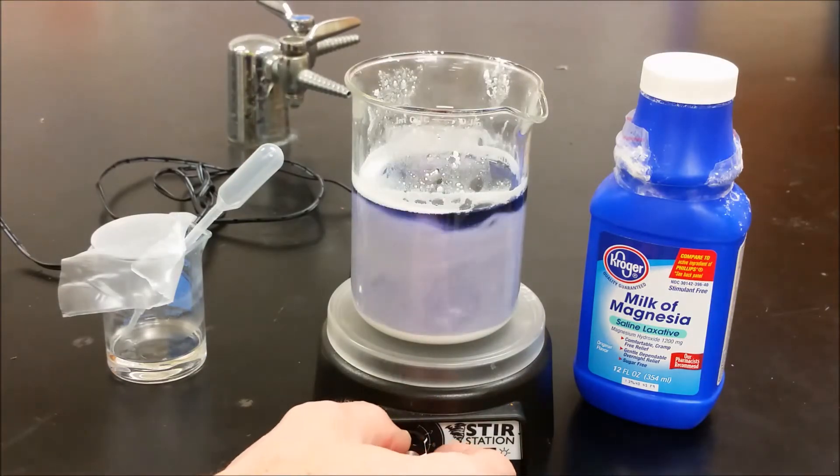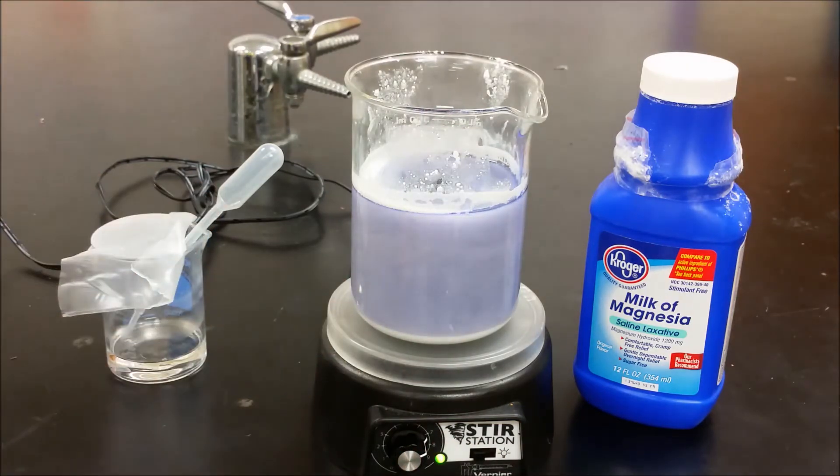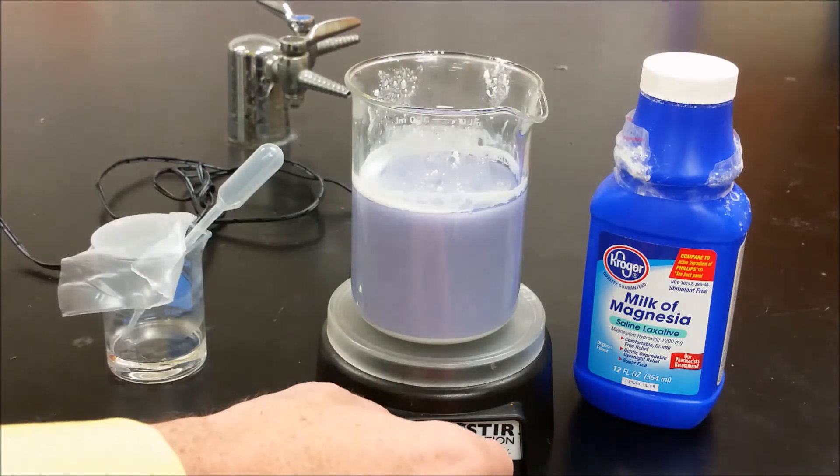Milk of magnesia is magnesium hydroxide, which is basic, so we see this purple color from the Universal Indicator. It's also insoluble in water, so only a really tiny amount is actually dissolved at this point.